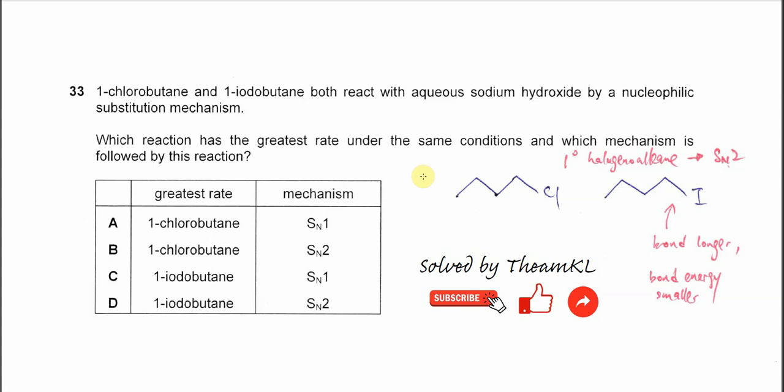Question 33. 1-chlorobutane and 1-iodobutane both react with aqueous sodium hydroxide by a nucleophilic substitution mechanism. Which reaction has the greatest rate, meaning which one is faster under the same conditions, and which mechanism is followed by this reaction?